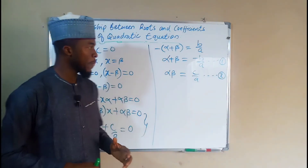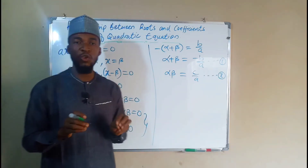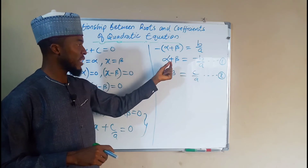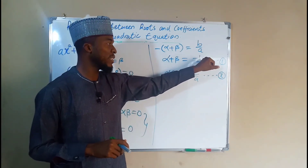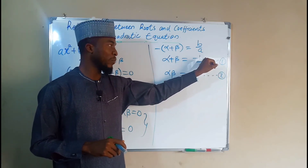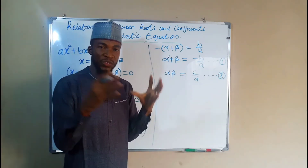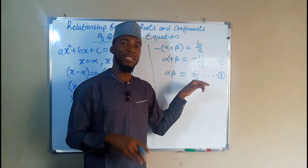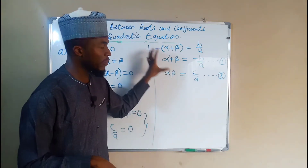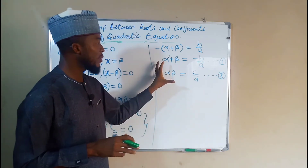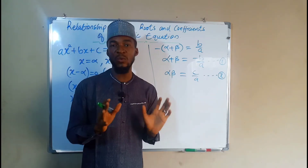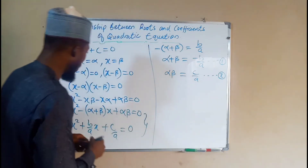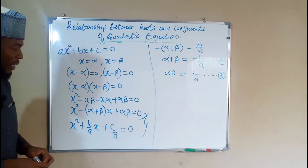What we are saying is: after solving any quadratic equation, the two real solutions alpha and beta satisfy these relationships. Their sum, alpha + beta, equals negative b over a — the negative of the middle coefficient divided by the leading coefficient. Their product, alpha times beta, equals c over a — the constant divided by the leading coefficient. Additionally, given any two roots, we can use these equations to reconstruct the original quadratic equation.